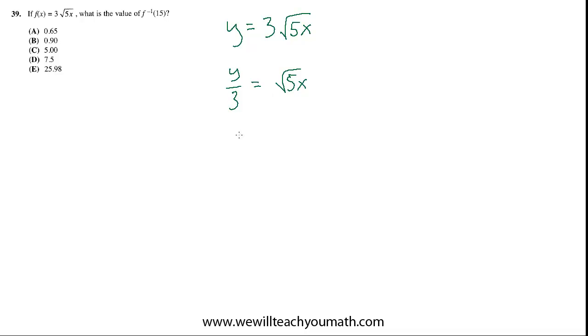Then we can square both sides, get rid of the square root symbol. So we'll get y squared over 9 equals 5x, and then we can divide by 5.